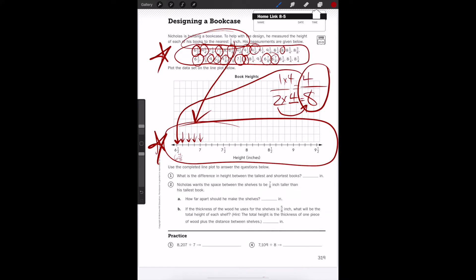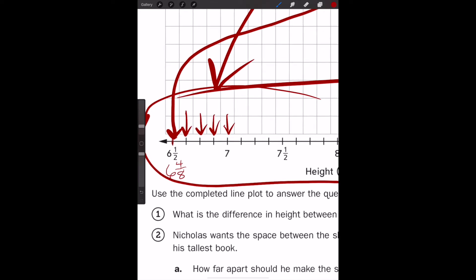Now that's going to be very important when we go to plot our data. So if this one is 6 and 4/8, and we are measuring to the nearest eighths, then wouldn't you say that this one would be 6 and 5/8, 6 and 6/8, 6 and 7/8? So if we continue on, we would know that this next line here would represent 7 and, can you say it?